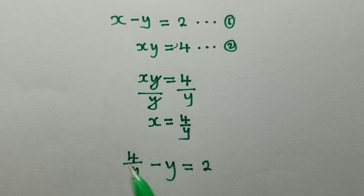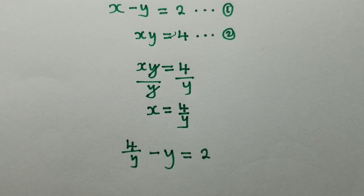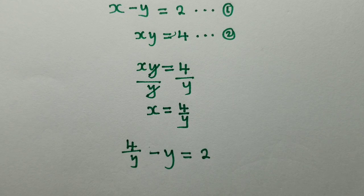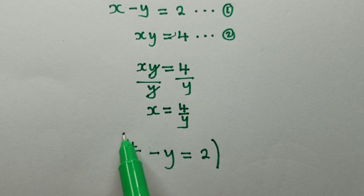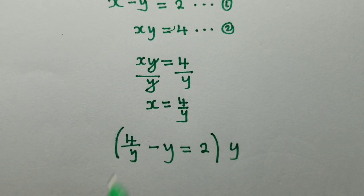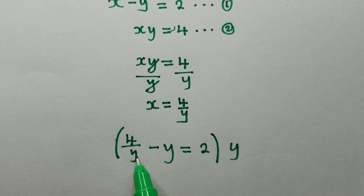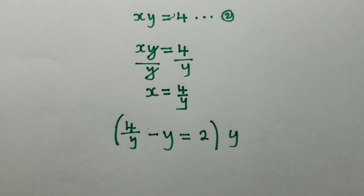When I put it here, we shall have 4 over y minus y is equal to 2. So remember, we must solve for y. So to solve for y, we first multiply throughout by y, so that we get rid of this fraction. We cancel the y which is in the denominator. So when we multiply 4 over y times y, this y and the y here will cancel.